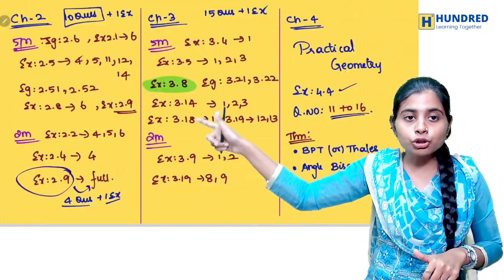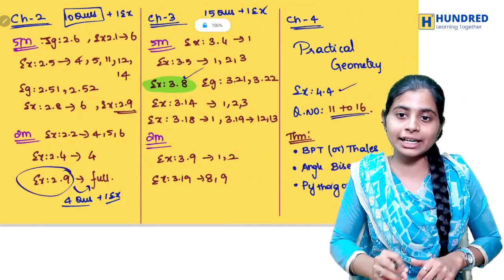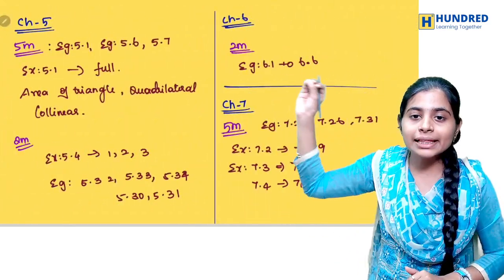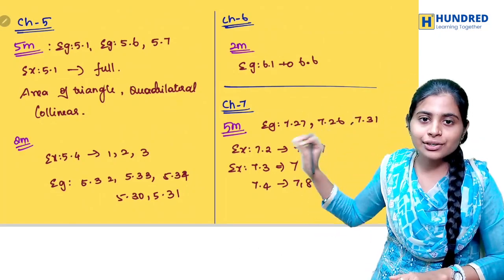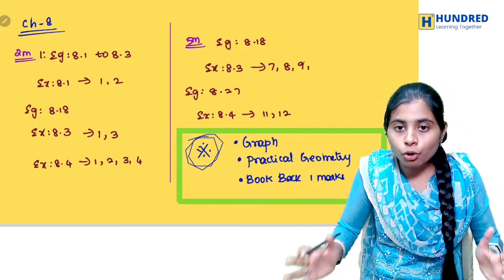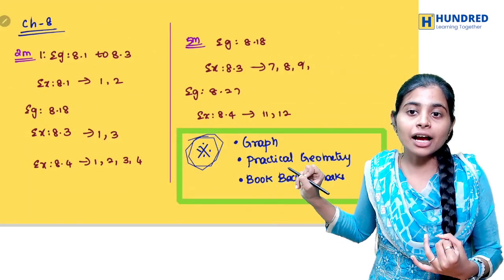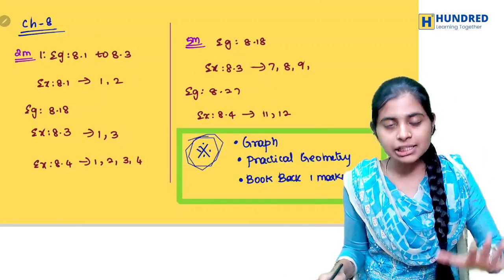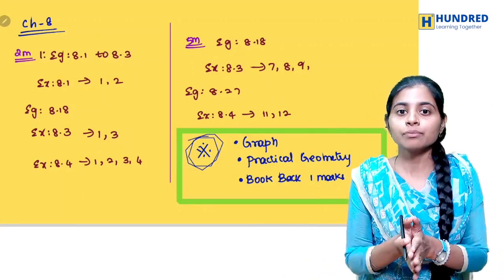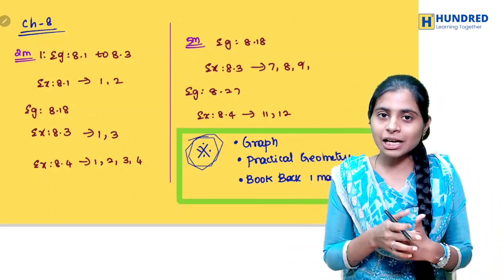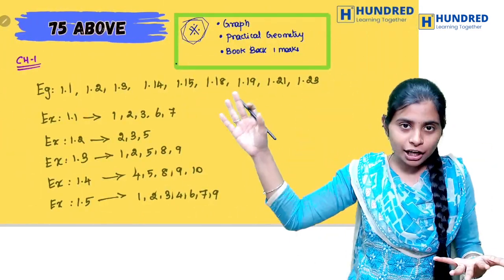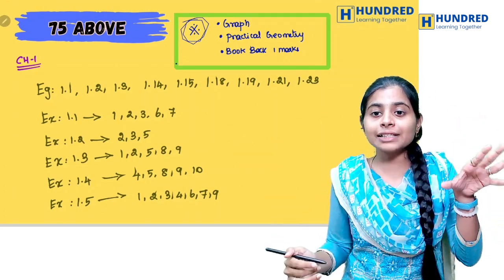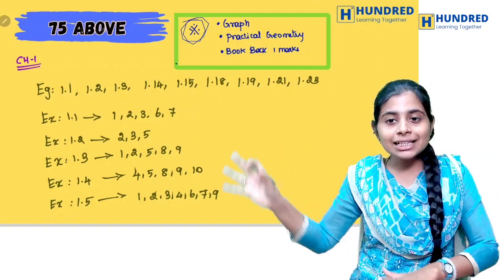Chapter 3 — that is chapter 3, section 3 point something. Then chapter 8. The distribution is roughly 4, 3, 3, 4, 4, 3, 4 — about 50 questions in total. This is chapter-wise.